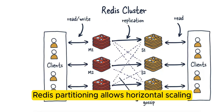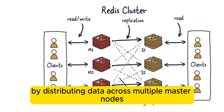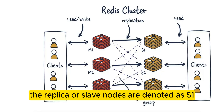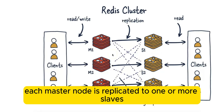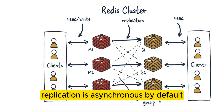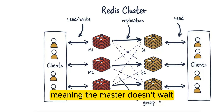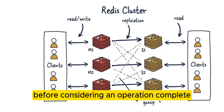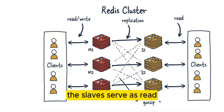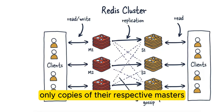Redis partitioning allows horizontal scaling by distributing data across multiple master nodes. The replica or slave nodes are denoted as S1, S2, and S3. Each master node is replicated to one or more slaves. Replication is asynchronous by default, meaning the master doesn't wait for confirmation from the slaves before considering an operation complete. The slaves serve as read-only copies of their respective masters.